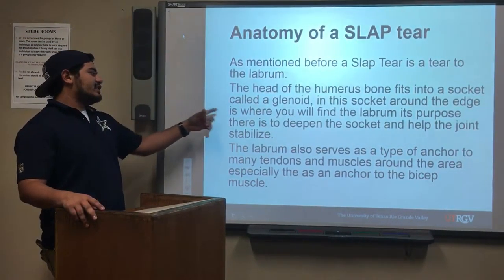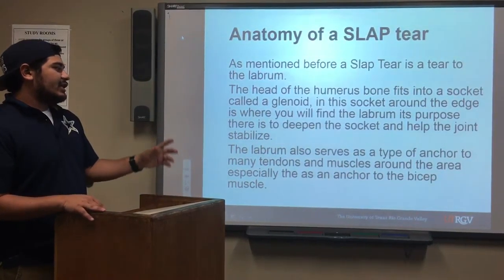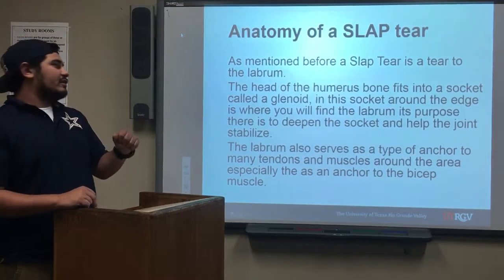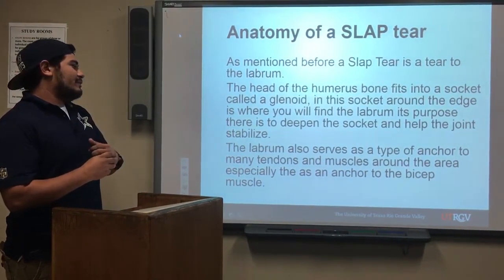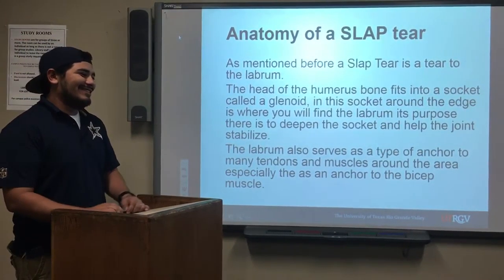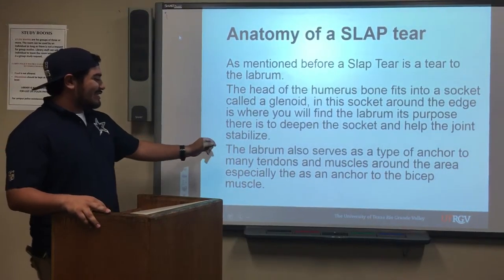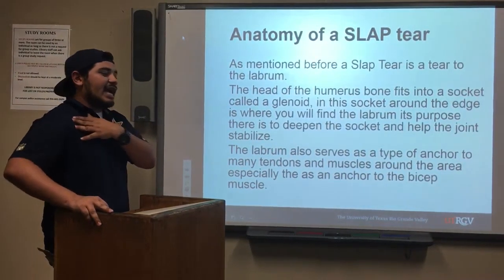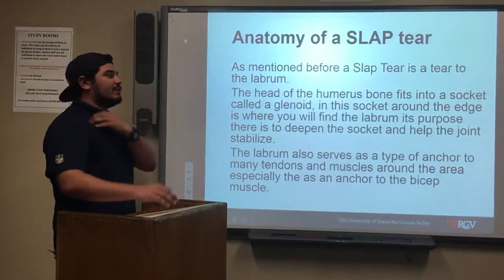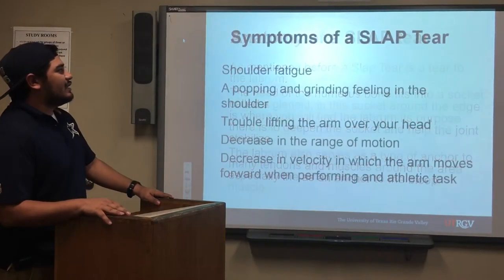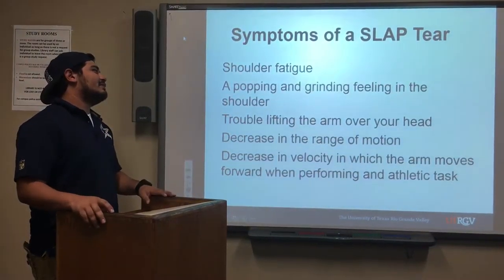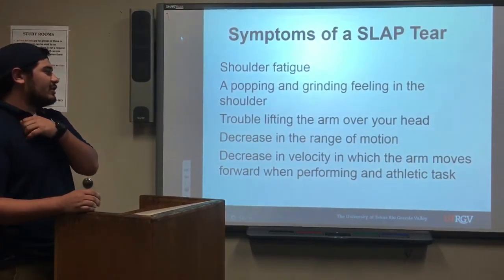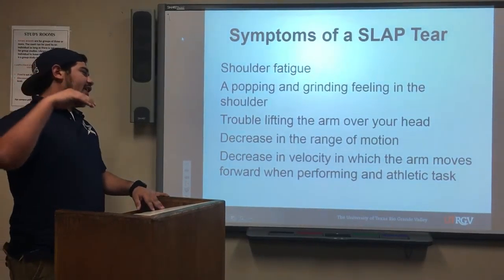A SLAP tear is a tear to the labrum. The head of the humerus bone fits into the socket called the glenoid, and this socket's edge is where you will find the labrum. Its purpose is to deepen the socket and help the joint stabilize. The labrum also serves as an anchor point for the bicep tendon that goes up the arm.